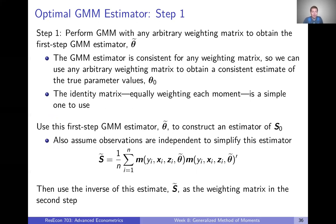In the first step, we perform GMM using any arbitrary weighting matrix to obtain the first-step GMM estimator, denoted θ̃ (theta tilde), to distinguish it from theta hat. Since the GMM estimator is consistent for any weighting matrix, theta tilde will be a consistent estimate of the true parameter values θ₀. The identity matrix is a convenient choice, equally weighting each moment, but any positive definite weighting matrix works. We then use theta tilde to construct an estimate of S₀.